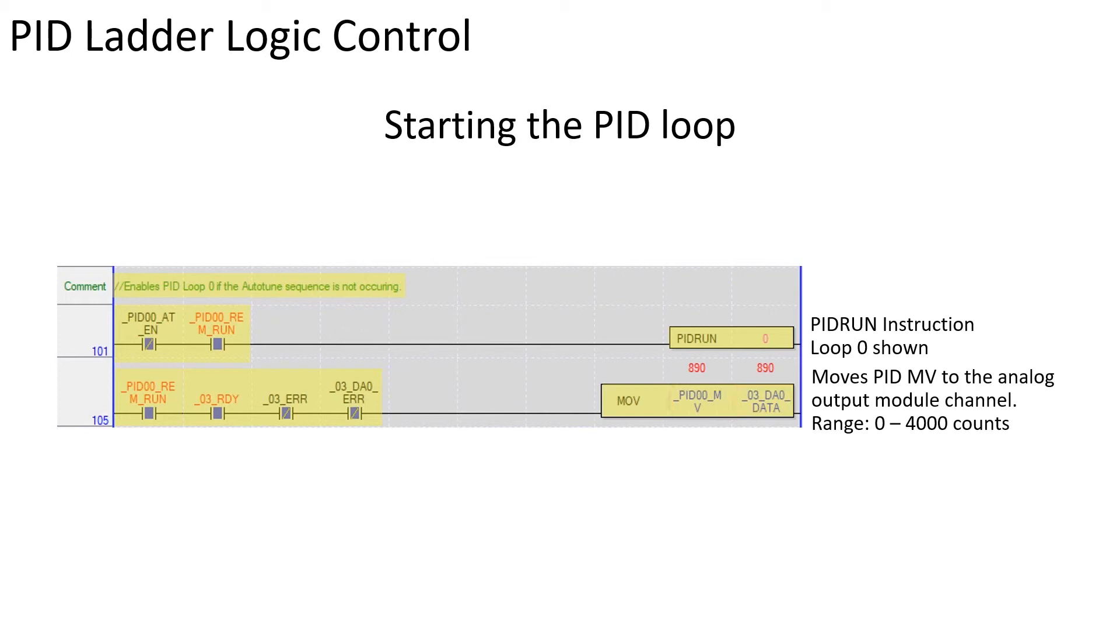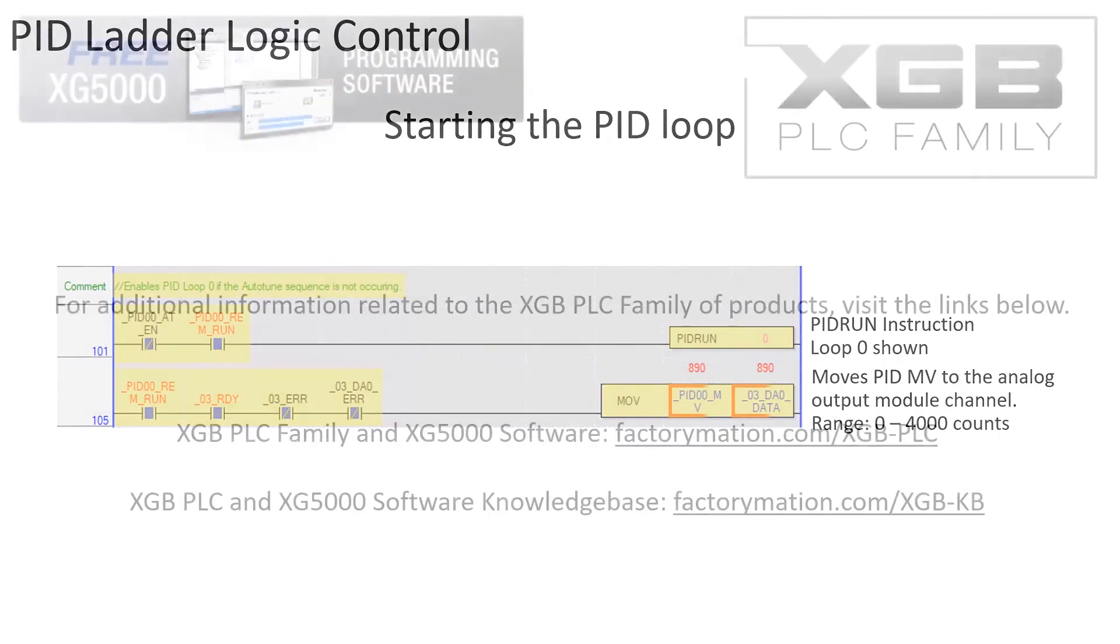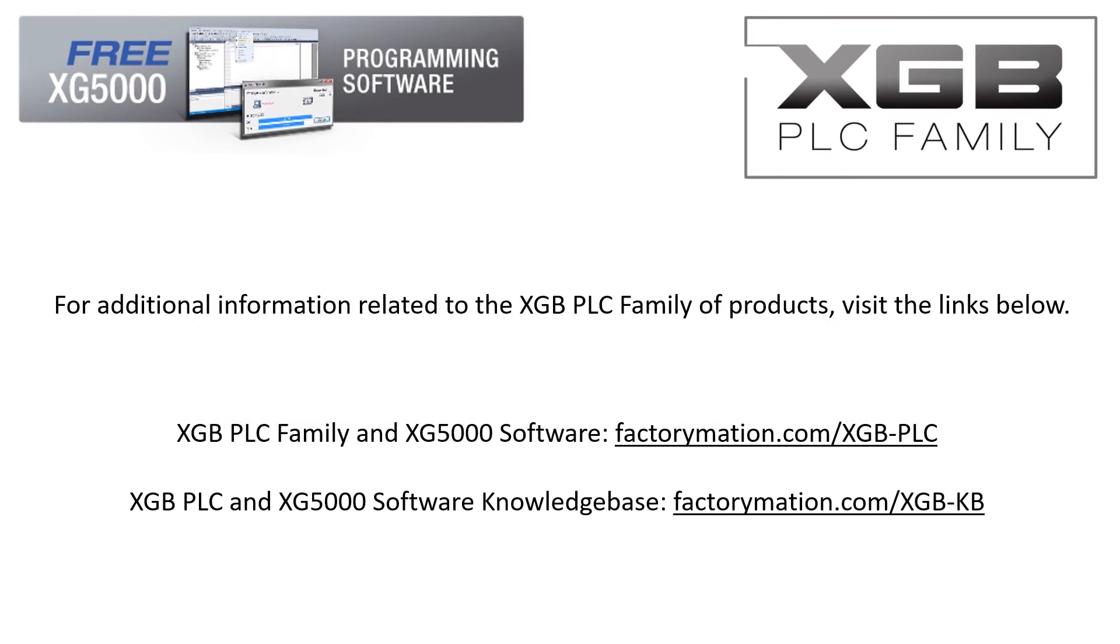A fully functional PID ladder program will use many more features like loop error detection and mode switching, HMI control. Auto and basic manual tuning for loop control is covered in other videos in this series. For additional information related to the XGB PLC family of products, visit the links below.